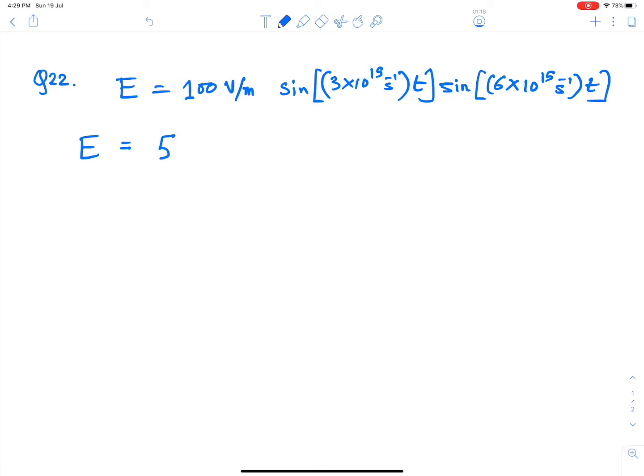This will be 50 V/m multiplied by cosine of 9×10¹⁵ s⁻¹ T minus cosine of 3×10¹⁵ s⁻¹ T. Remember the formula 2 sin C sin D. So it is made up of two light waves.